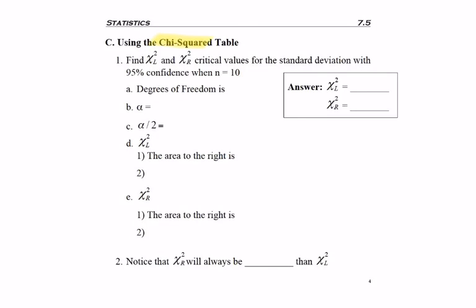Now let's get a little bit of practice using the chi-squared table. So I'm asked to find chi-squared left and chi-squared right, which are the two critical values